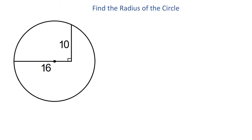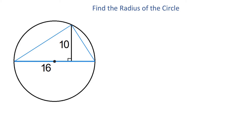In the first step, we will extend this line segment to draw the diameter of this circle. Here we have the diameter, and now we will connect these two points, and then these two. What we have formed here is a triangle.